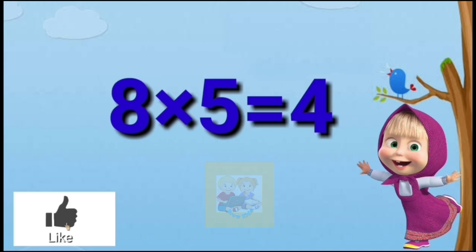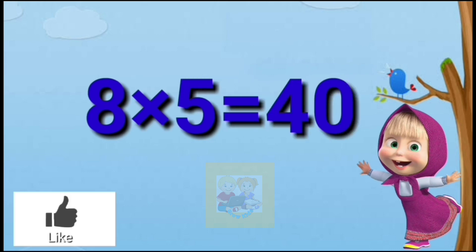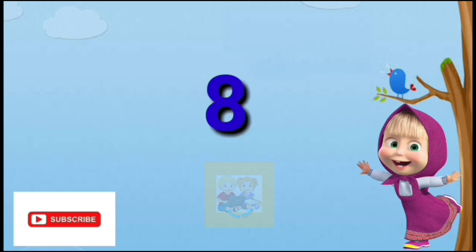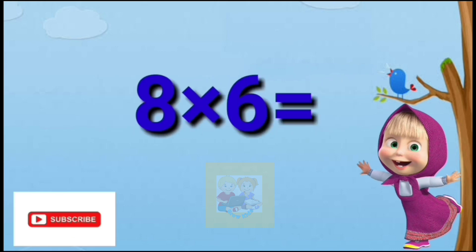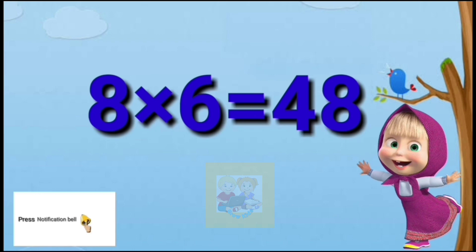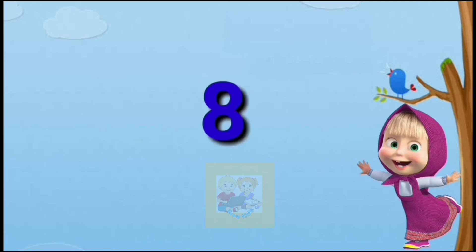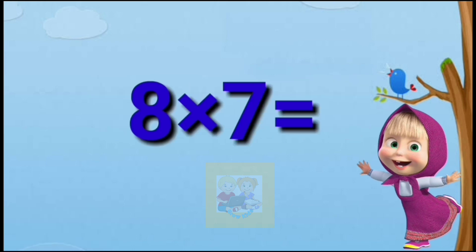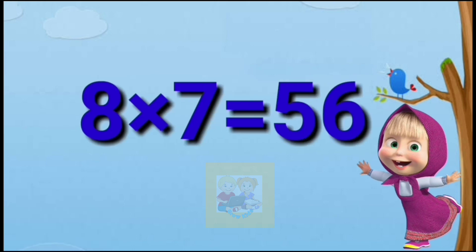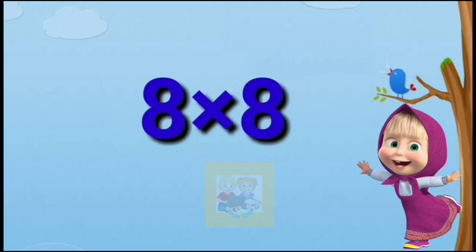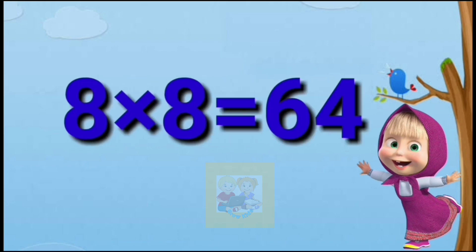Eight fives are forty. Eight sixes are forty-eight. Eight sevens are fifty-six. Eight eights are sixty-four.